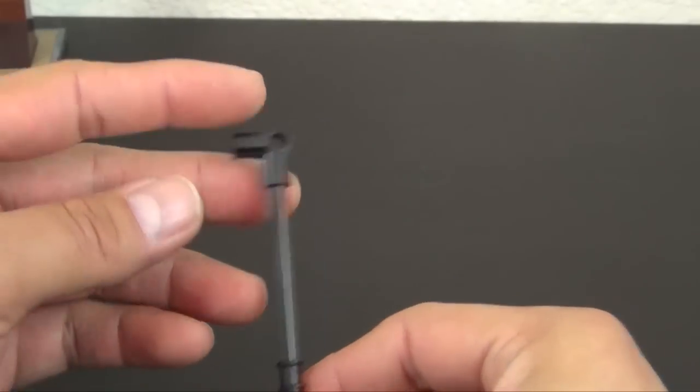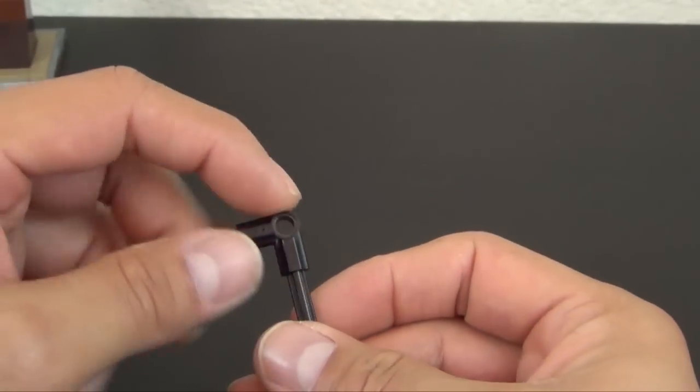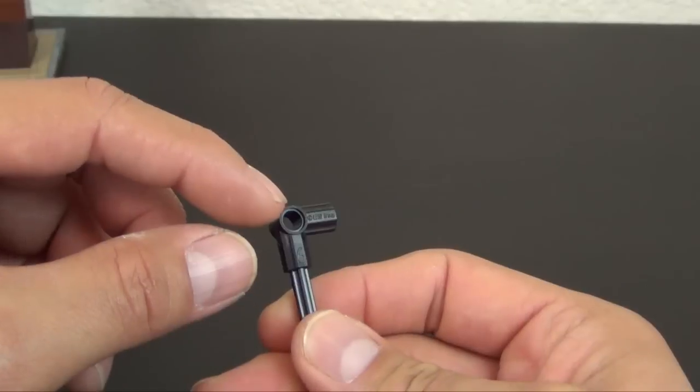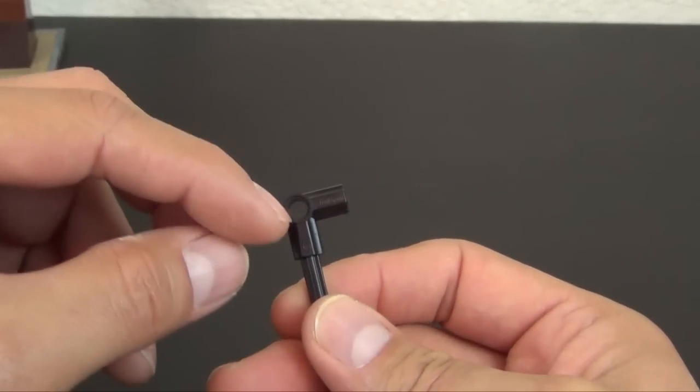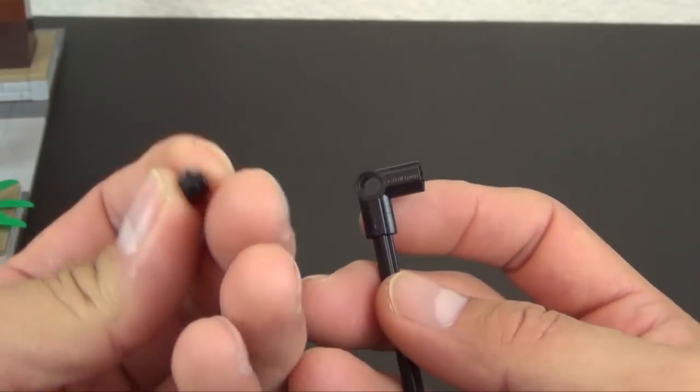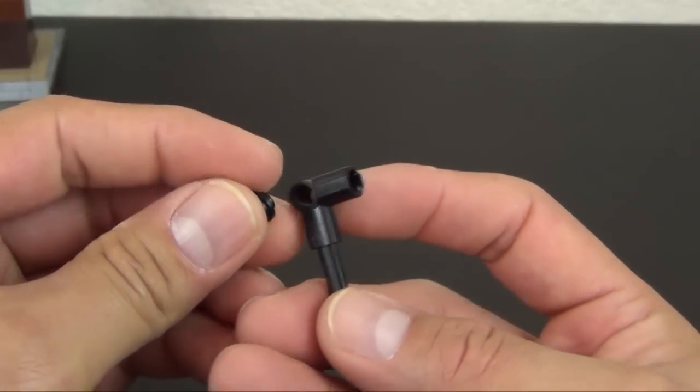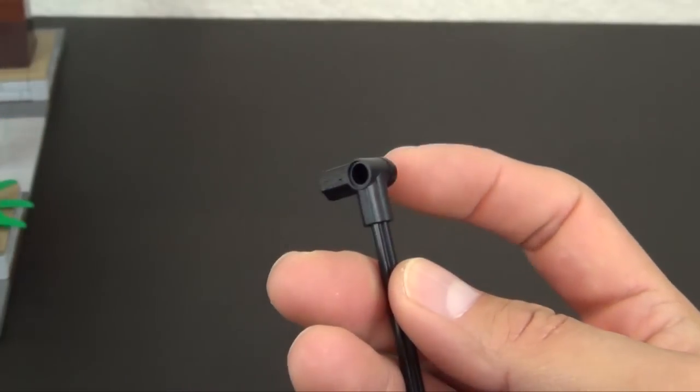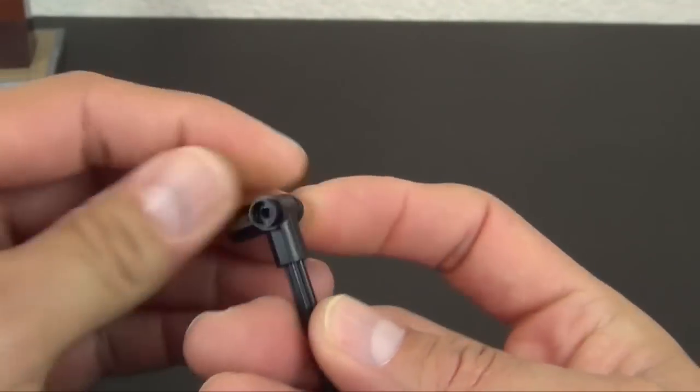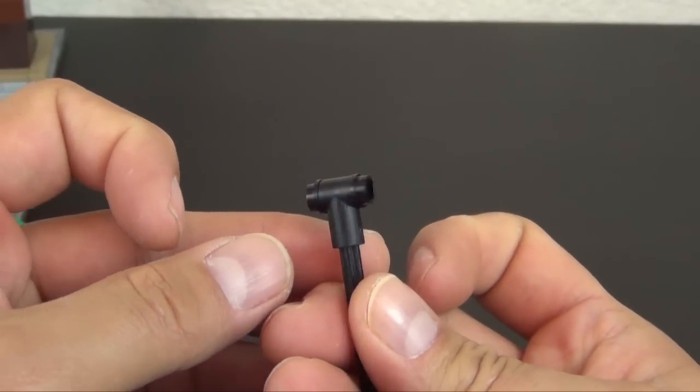Now we have this eight-long—it could be whatever length you want—but it's a black Technic axle. At the top we put this 90-degree axle connector, so you can see that's more or less where the top of the lamp starts to bend.